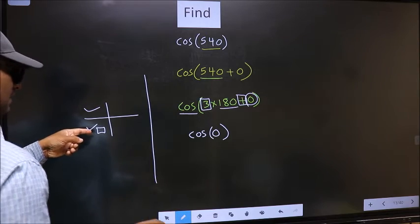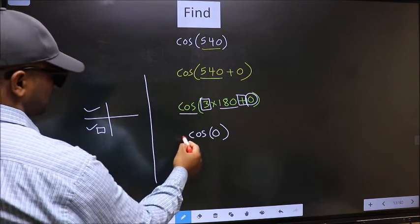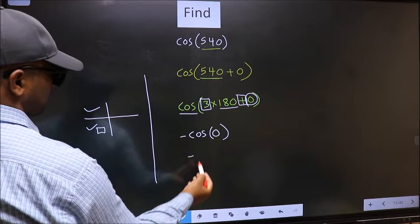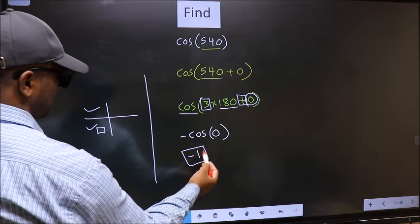And in the third quadrant, cos is negative. So we should put negative. So negative cos 0 is 1. This is our answer.